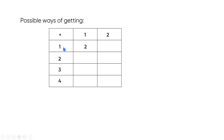The first box has slips 1, 2, 3, and 4. Second box has slips 1 and 2. Taking 2 from first box and 1 from second box gives a sum of 3. Taking 2 from first box and 2 from second box gives a sum of 4.